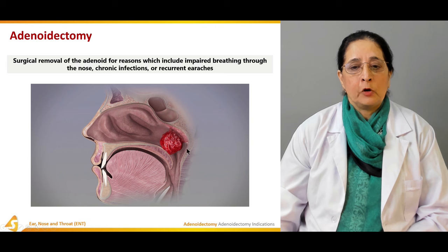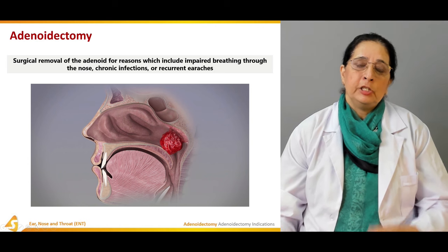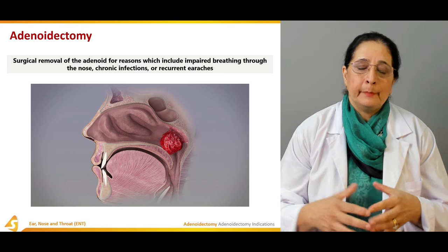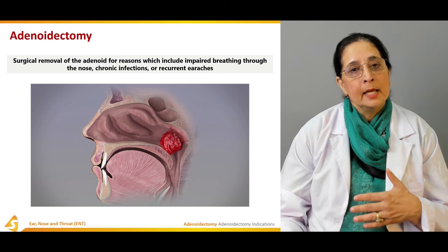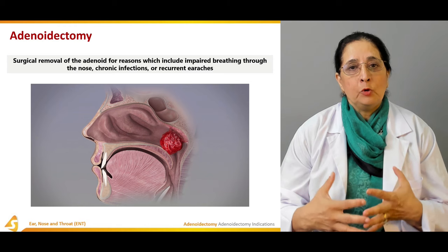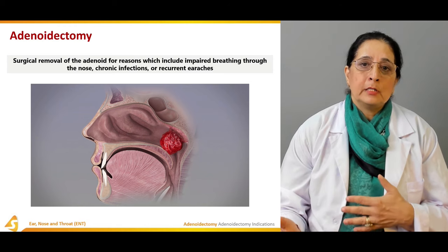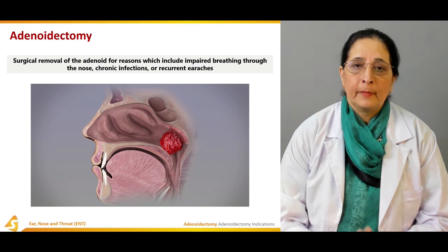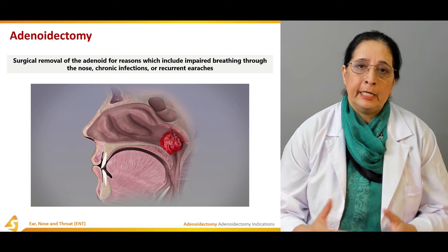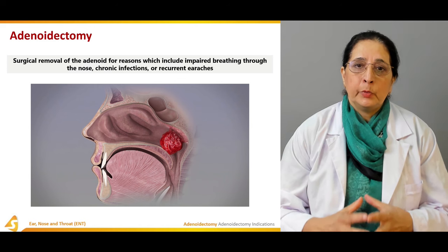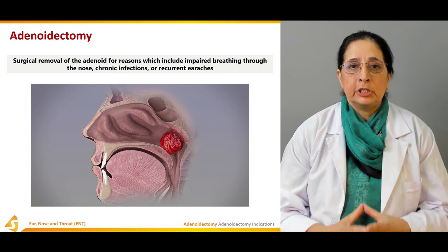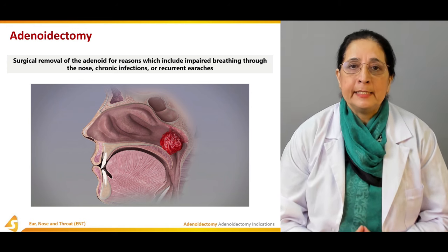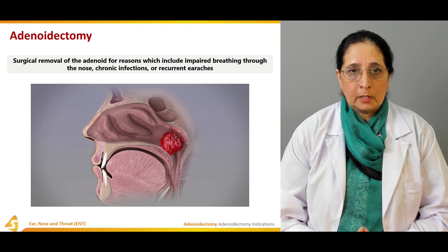The adenoid tissue is a lymphatic tissue that usually performs its function by the age of five years. After five years it slowly shrinks or regresses because many other tissues start performing that function. So in children up to five years of age this adenoid tissue is an important lymphatic tissue that can protect against different infections, fight against germs, and provide immune protection.